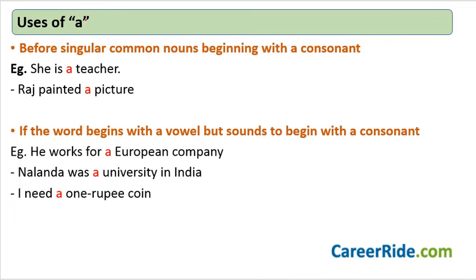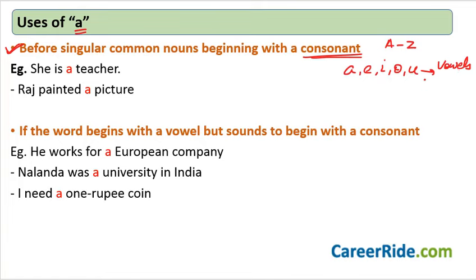Coming to the uses of indefinite articles A and An — let us see where you should use A and where you should use An. Rule number one: you use A before singular common nouns beginning with a consonant. The alphabets A, E, I, O, and U are your vowels; all other alphabets are consonants. So whenever your noun begins with a consonant, you use the indefinite article A. For example: 'She is a teacher' — teacher begins with T, which is a consonant. 'Raj painted a picture' — picture begins with P, a consonant.